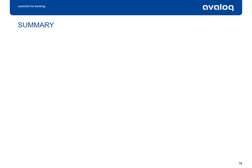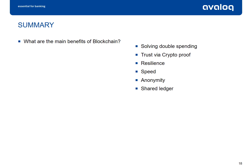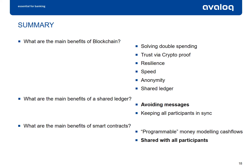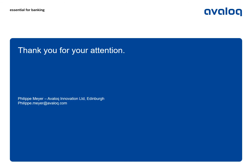Let's summarize what we have seen today. The main benefits of blockchain: it solves the double-spending problem, brings trust via crypto-proof, is resilient via distribution, is fast, is anonymous, and is a shared ledger where all transactions are visible to all participants. The main benefit of a shared ledger is avoiding messages and keeping all participants in sync. The main benefits of smart contracts are programmable money, modeling cash flows, and sharing with all participants. Many thanks for your attention and let's start the Q&A session.